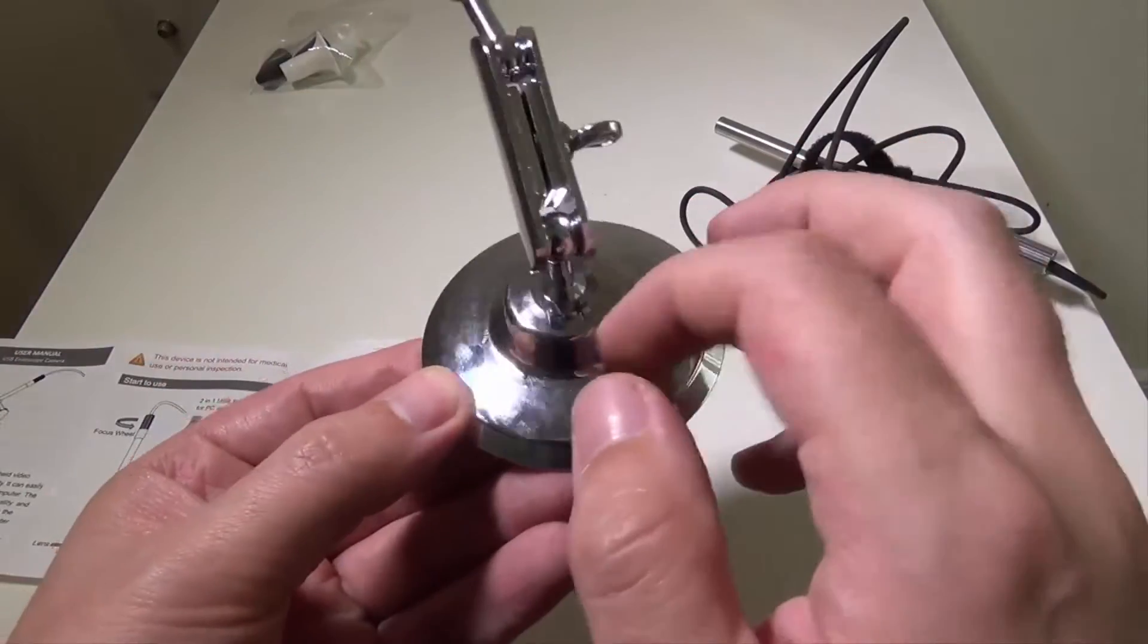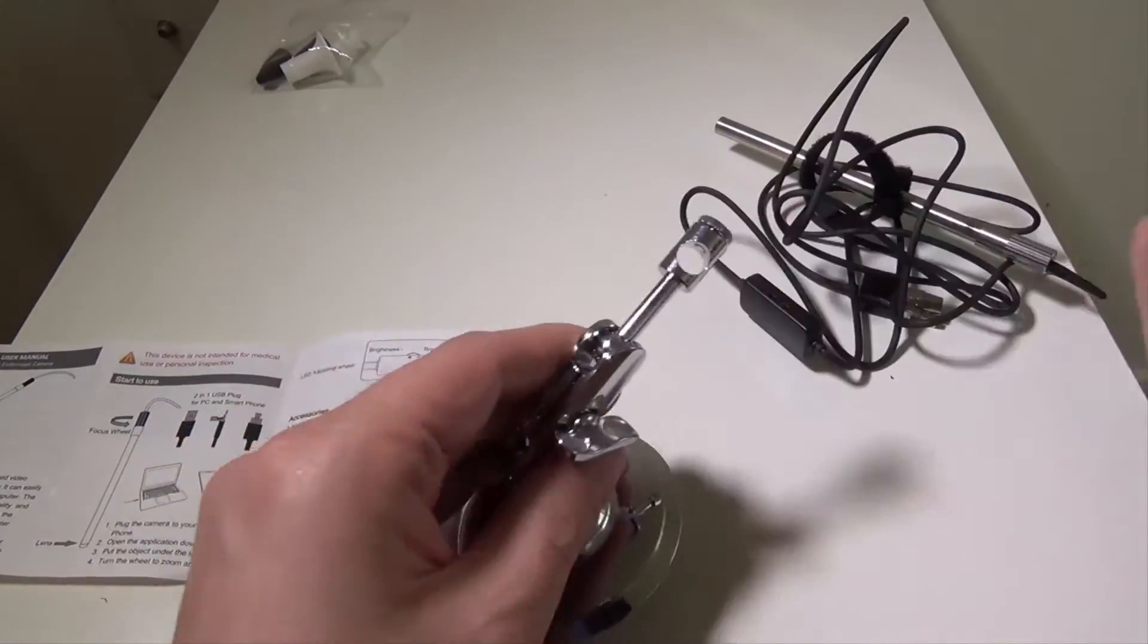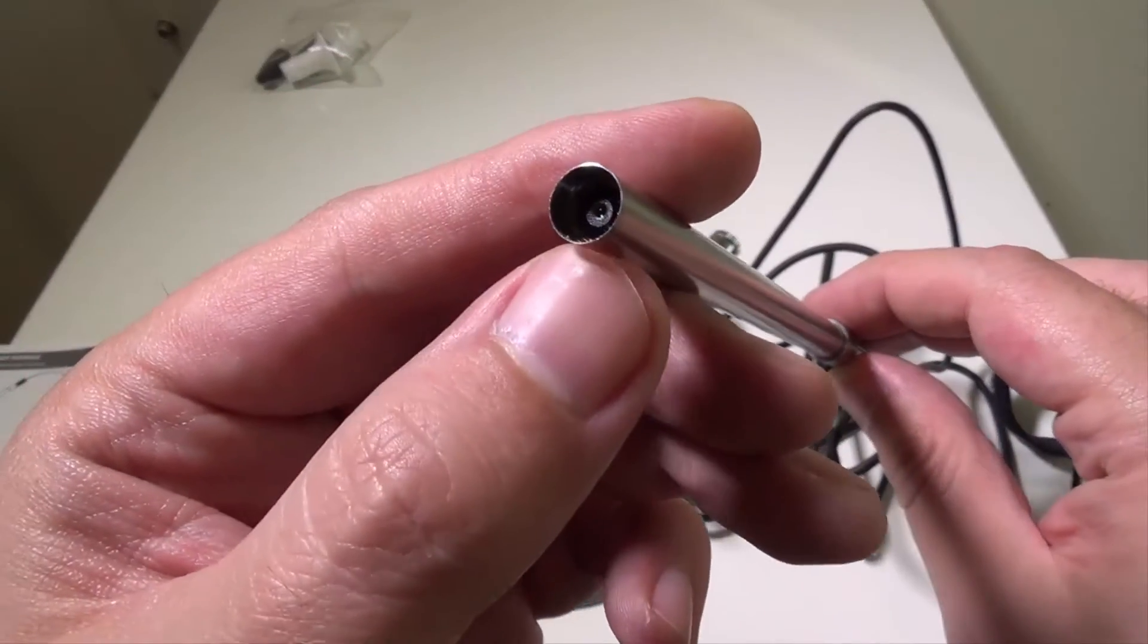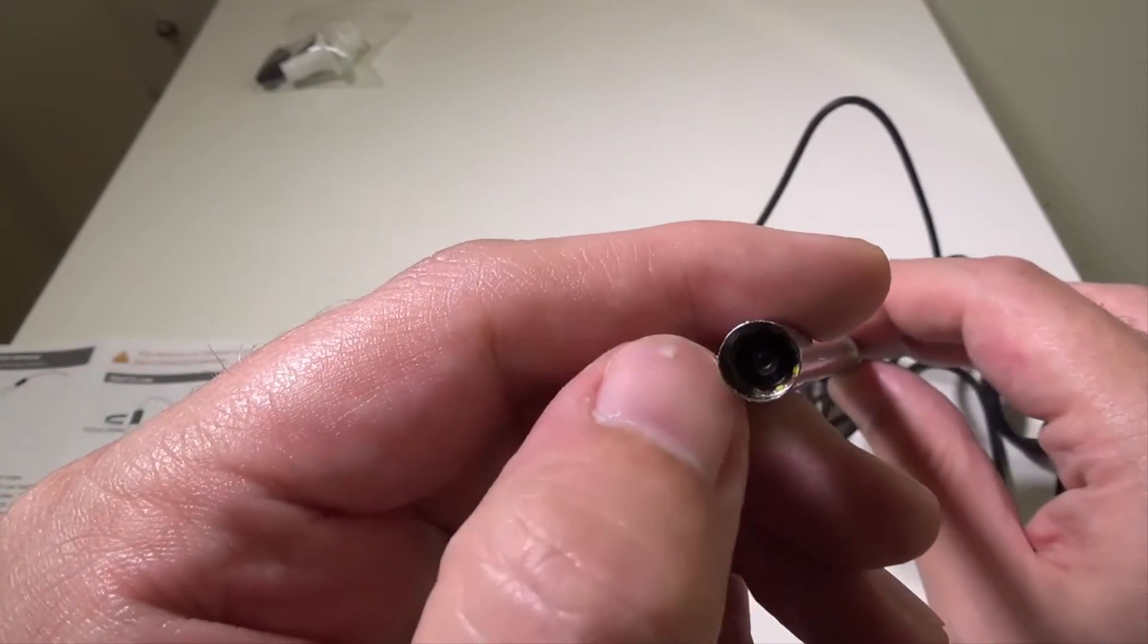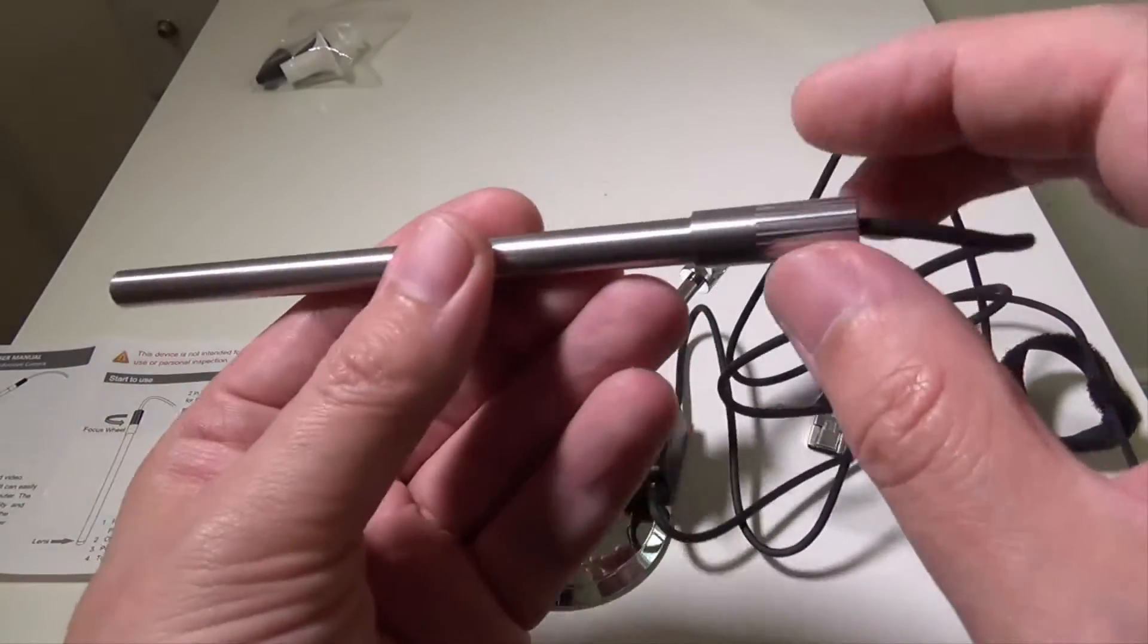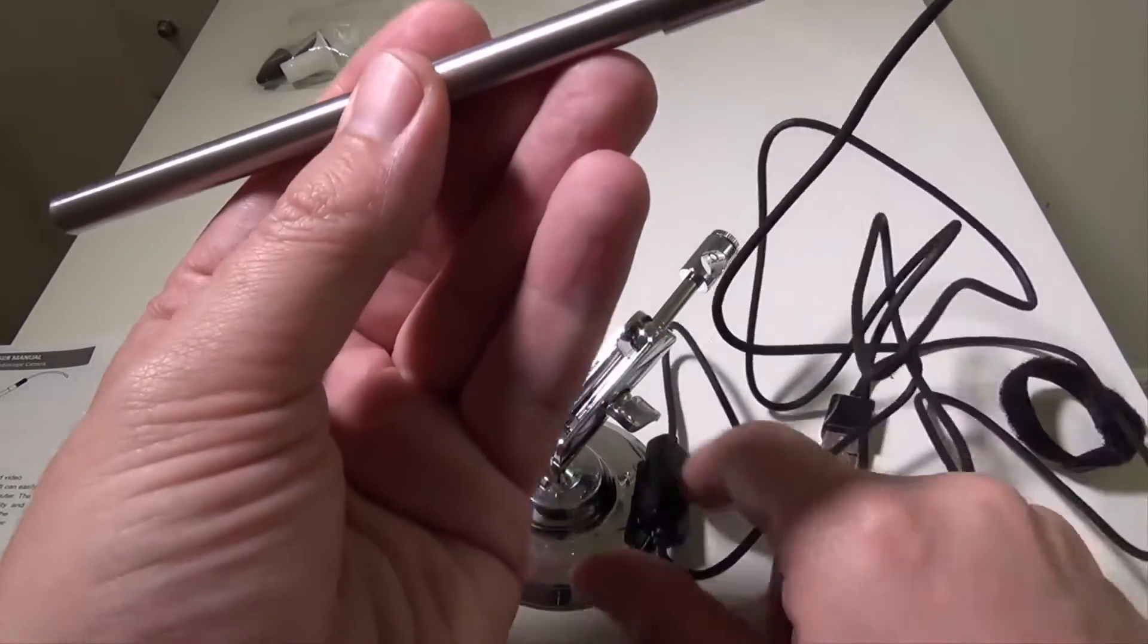They've got a nice stand here, it's made out of metal, this is a metal stand, very secure, and it will take the endoscope in this side here. As you can see, you've got six LED lights around the outside of the lens. It's IP67 waterproof and then here is your focus ring to allow you to focus on whatever subject that you need to.